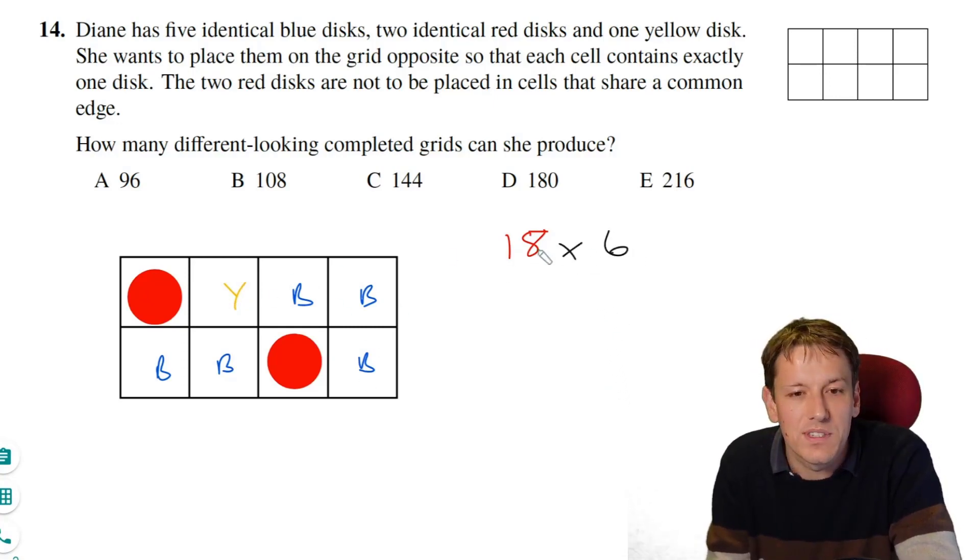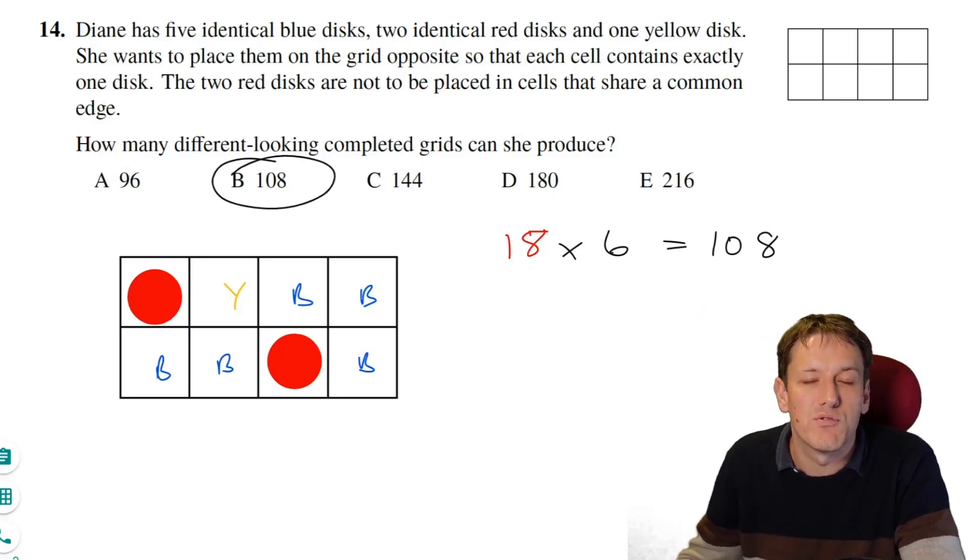So for any particular combination, there's six ways of putting the yellows and the blues. So I'd need to do 18 times 6, that's 60 plus 48, which is 108. And in total, then there are 108 different looking completed grids that it's possible to produce.